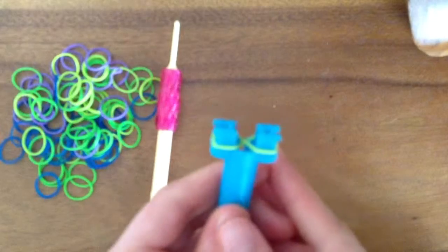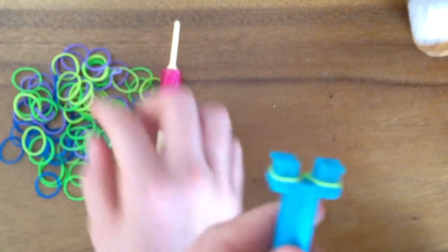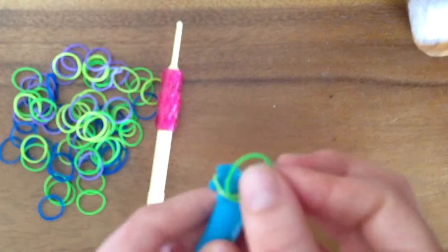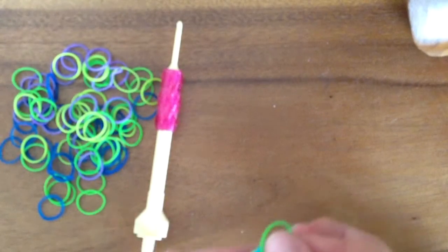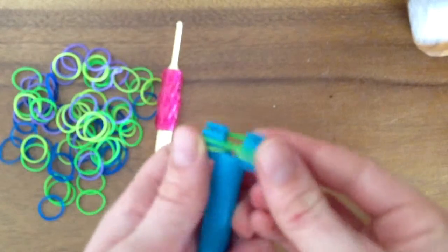Now you're going to push it down. After that, you take another rubber band and you place it right on top of the second one. Except this one you're not going to twist.